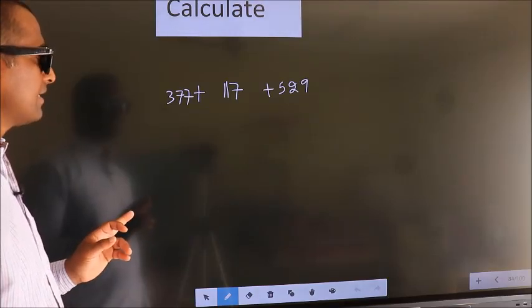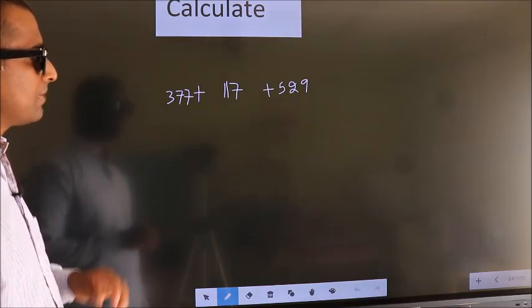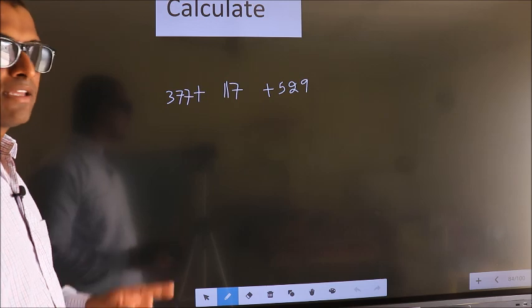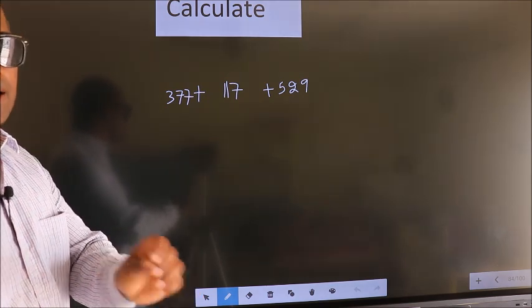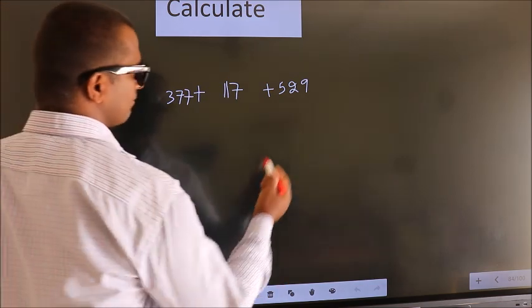Calculate 377 plus 117 plus 529. To add this faster, we should divide the given number into pairs. In this way.